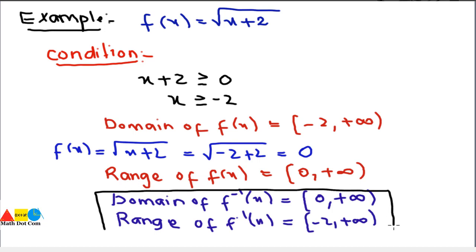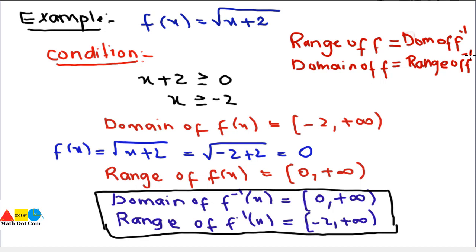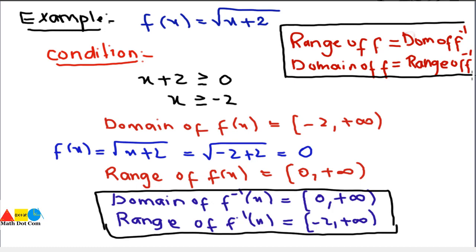So this is how you can find the domain and range of inverse functions — just find the domain and range of the given function and change their positions for the inverse. Our final deduction is: range of f = domain of f-inverse, and domain of f = range of f-inverse. By keeping this in mind you can easily find the domain and range of any inverse function. That's all from today's lecture. Thank you.